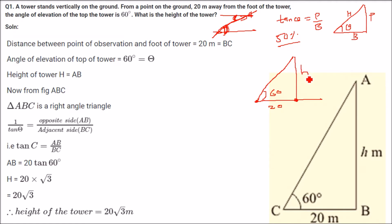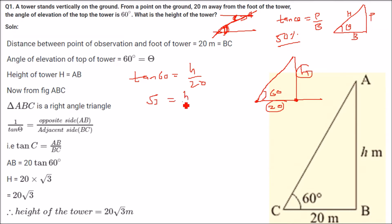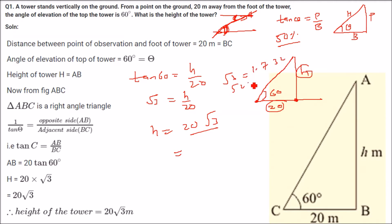What is the height of the tower? Let us assume the height as h. We will take tan 60. Tan 60 is perpendicular by base, that is h by 20. Tan 60 is root 3, so root 3 equals h by 20, giving h equal to 20 root 3. This is the answer. If they ask for a decimal, root 3 is approximately 1.732, so you can multiply. But 20 root 3 is also acceptable.